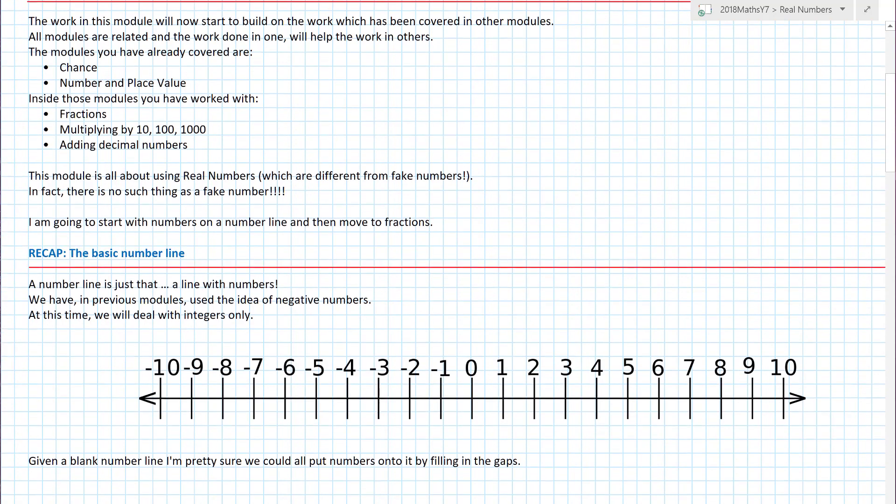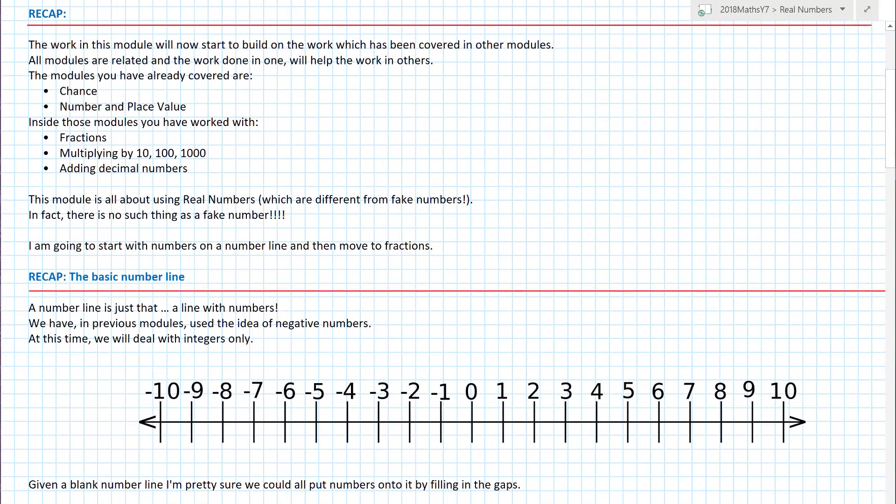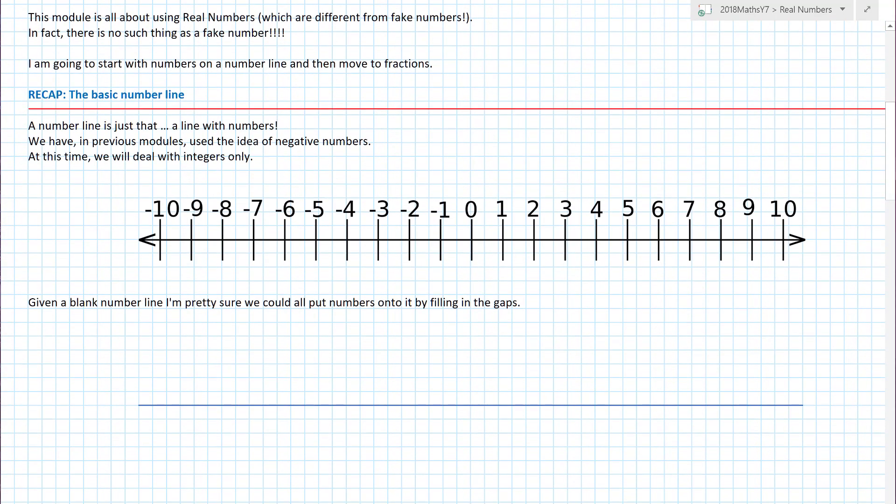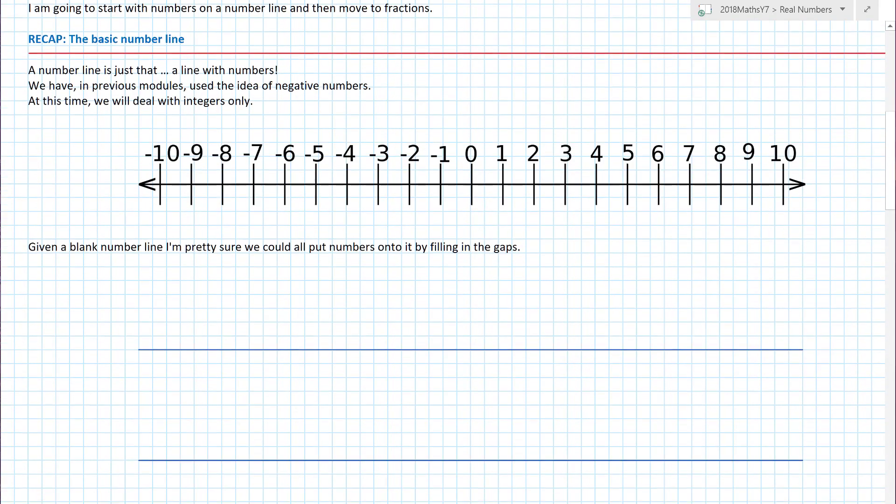The work in this module will actually build on the work which has been covered in other modules. So those of you again who've been following along know that we've been doing things by chance, number and place value and we've dealt with fractions multiplying by ten hundred thousand and adding decimal numbers. This module is on real numbers and obviously they're different from fake numbers and there's no such thing as a fake number. But we're going to start with numbers on the number line.